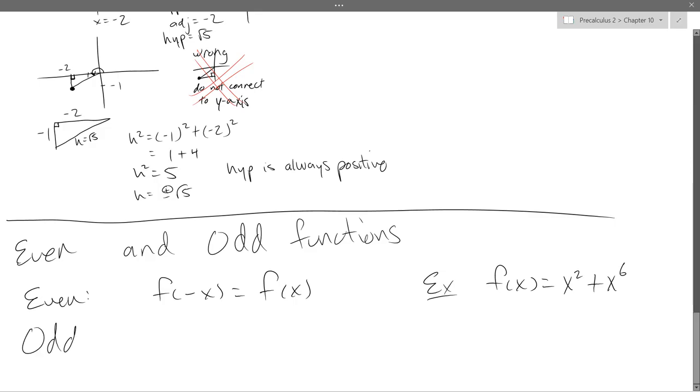Odd. From that analogy, you could probably guess a good example for an odd function. Maybe I don't want to be brave. x cubed. x to the first power would have worked as well, but we'll go with x cubed. So that'll be odd. Plug in negative x, you'll get your negative back out because it's an odd power.